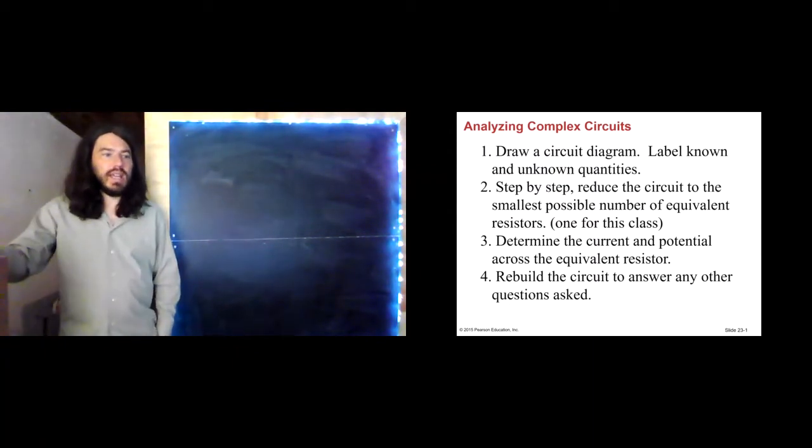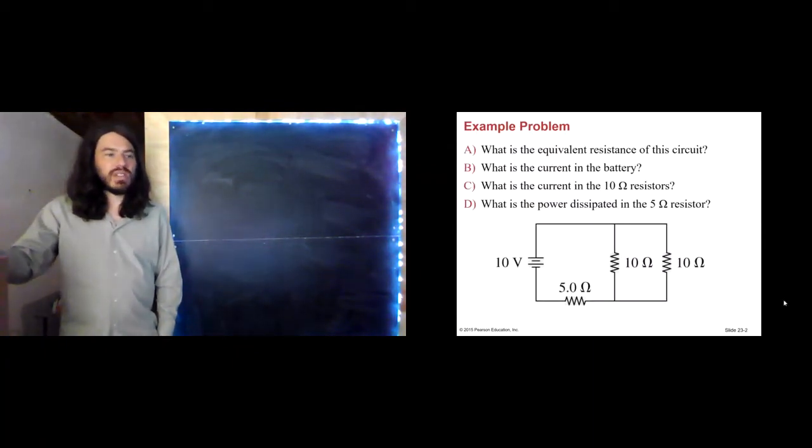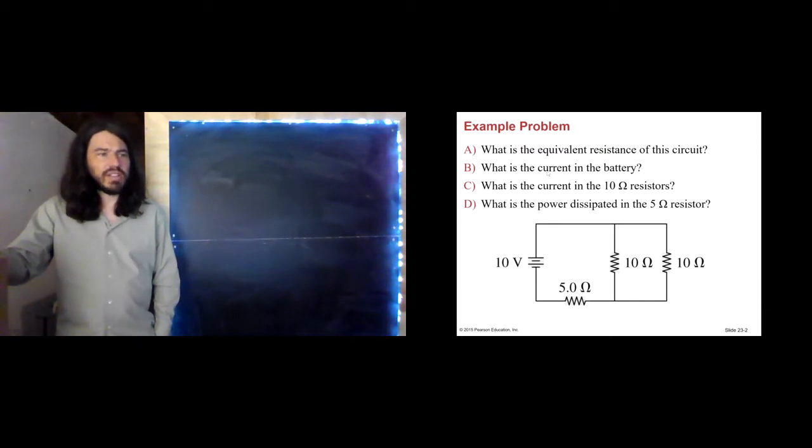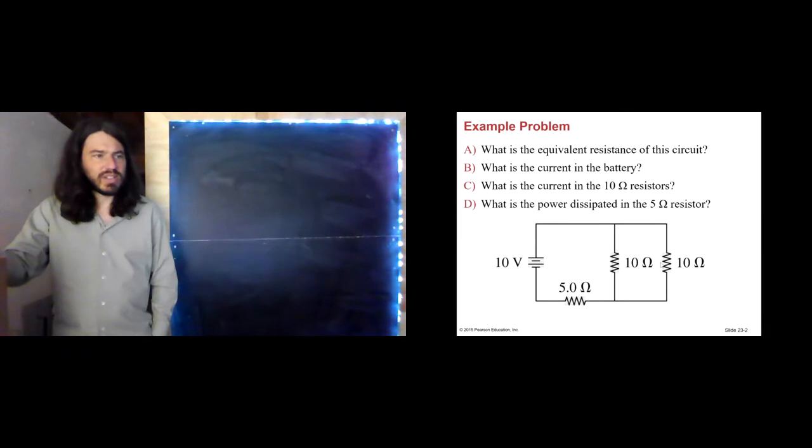Let's apply that to an example here. So here we see a circuit. It's not super complicated. One battery, three resistors. I'm going to ask you some stuff. I'm going to ask you about current in the battery, the current in one of these resistors, and the power dissipated by this resistor.